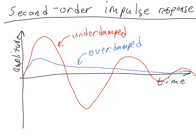The third way that a second order system can respond is called critically damped. A critically damped response is the fastest response that the system can have without having oscillations. It will initially shoot higher than overdamped and less than underdamped, but it will much more quickly approach the steady state value compared to the overdamped case.